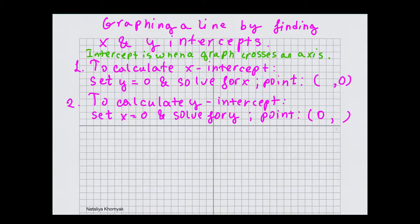Graphing a line by finding x and y intercepts. An intercept is when a graph crosses an axis. To calculate the x-intercept, you set y equal to 0 and solve for x. The point will be whatever you calculate for x, and 0 for y. To calculate the y-intercept, you set x equal to 0 and solve for y. So your point will be 0 for x and whatever you calculate y to be.